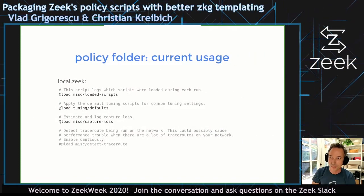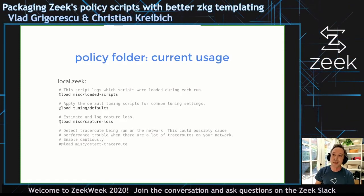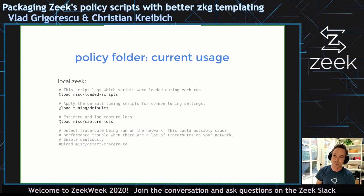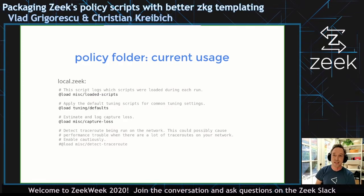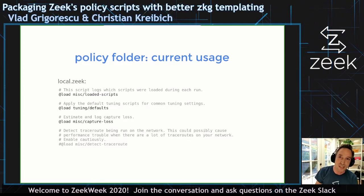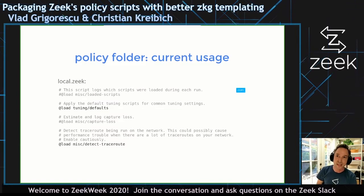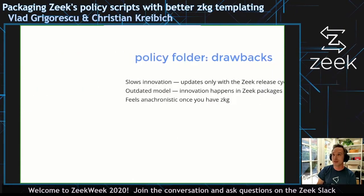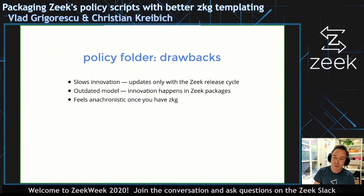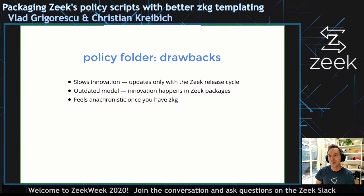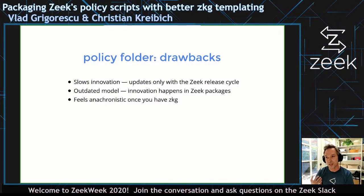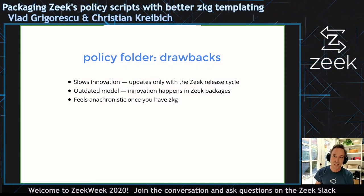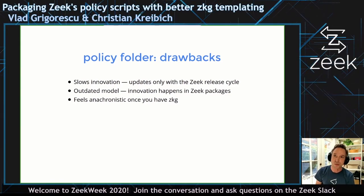The way this looks right now is that there's the file local.zeek, where you have lines that selectively pull in functionality from the policy folder — literally just load statements. If you change your mind about what you need in your installation, you go in there and change the lines a little bit, edit that file, and restart your cluster. The policy folder is simple and straightforward, but it has a couple of drawbacks. The biggest is that it just slows down innovation.